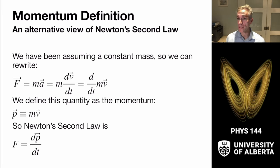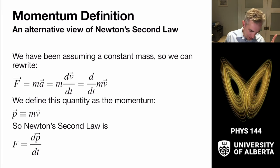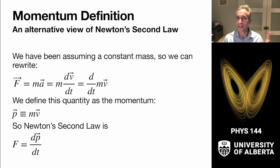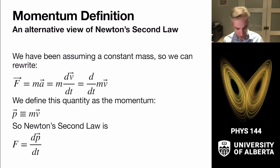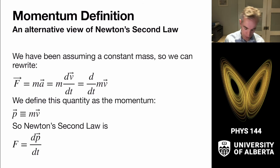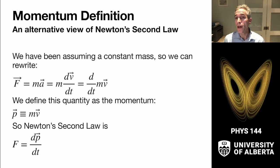A few things about momentum. Number one, it's a vector. Because velocity is a vector and mass is a scalar, we multiply those two together and get a vector that is aligned with the velocity vector.